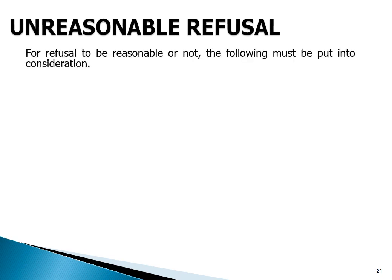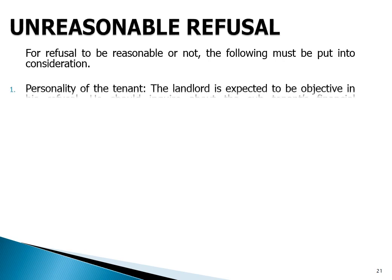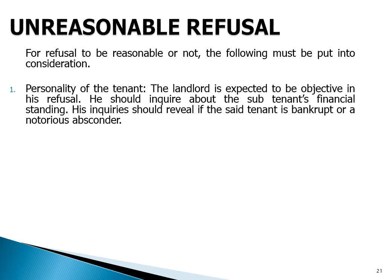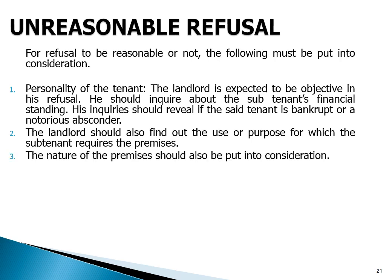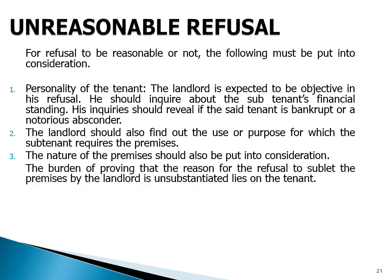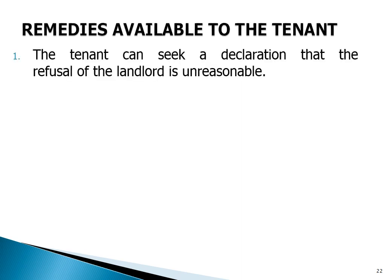For refusal to be reasonable or not, the following must be put into consideration: one, the personality of the proposed tenant — the landlord is expected to be objective and should inquire about the subtenant's financial standing and whether the subtenant is bankrupt or a notorious absconder; two, the landlord should find out the user purpose for which the subtenant requires the premises; three, the nature of the premises. The burden of proving that the reason for refusal is unsubstantiated lies on the tenant — Holder, Bars and Co. Limited v. Gibbs [1925] Ch 575.